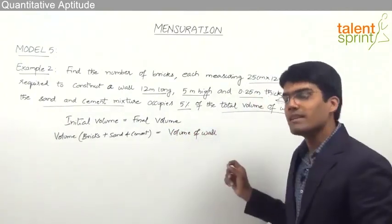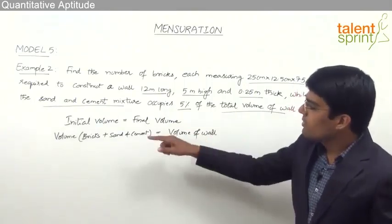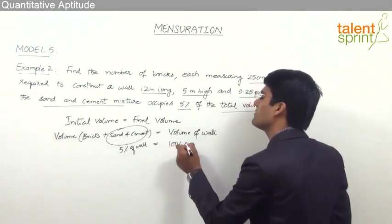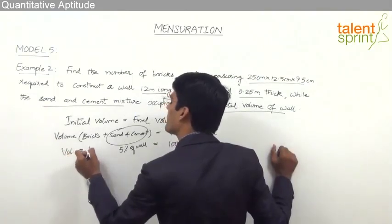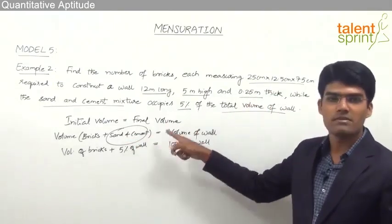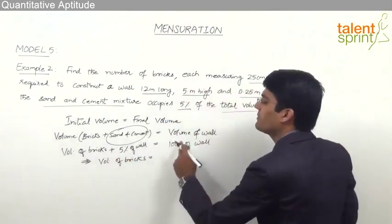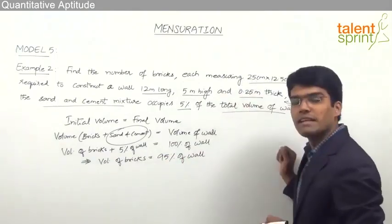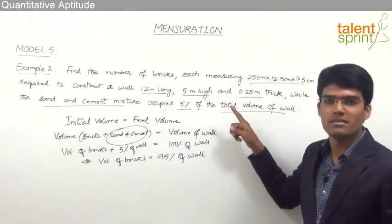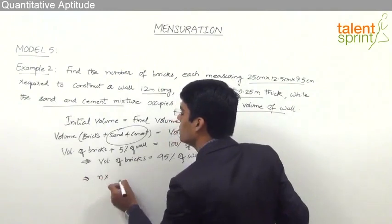The concept is the same: volume of bricks plus sand and cement mixture equals volume of the wall. Since sand and cement takes 5% of the wall's volume, and the total wall is 100%, the volume of all the bricks together should be equal to 100% − 5% = 95% of the volume of the wall. Volume of bricks = N × volume of each brick, and this equals 95% of the wall's volume.